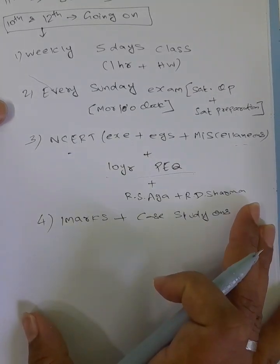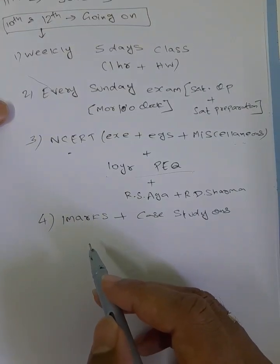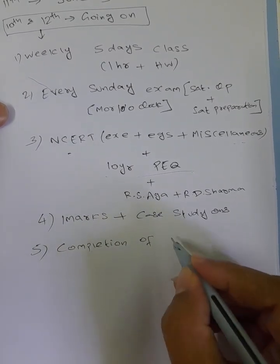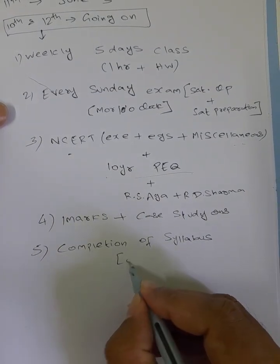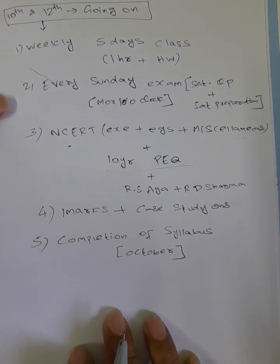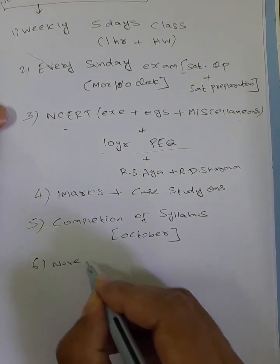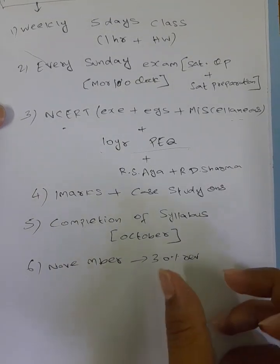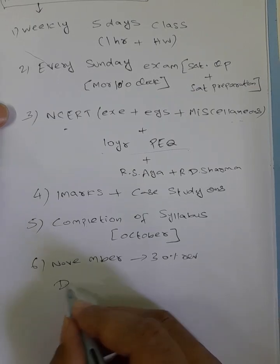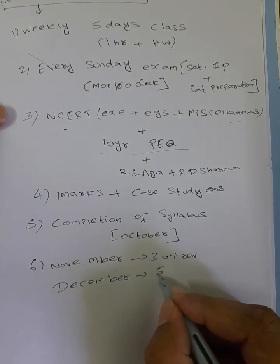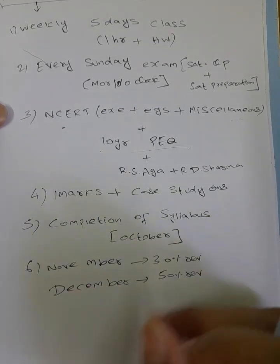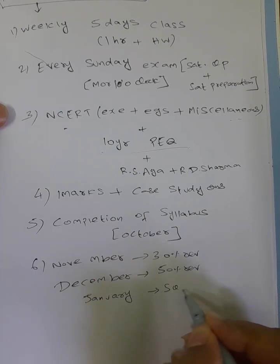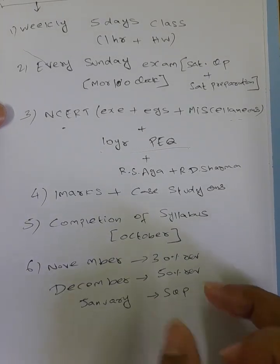So this is the total schedule. Syllabus completion: I will complete the 10th and 12th class in October. I will complete the class in November. In December, sample question papers and board exam will be sent daily along with doubt clarification.